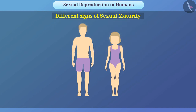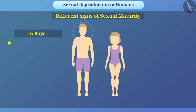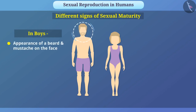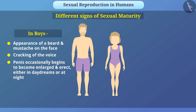For example, the individual becomes more aware of himself and towards the opposite sex. During this period, there are some changes which are different in boys and girls. In boys, there is appearance of a beard and moustache on the face, cracking of the voice, and the penis occasionally begins to become enlarged and erect either in daydreams or at night.